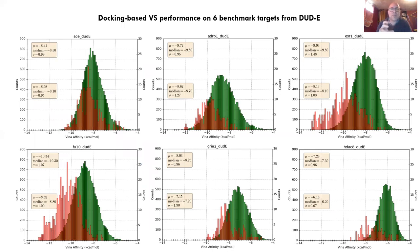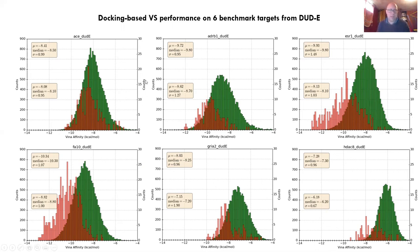Looking at six different benchmarking targets — six different proteins with known active and inactive compounds — this shows the score distributions for actives and inactives using a program called Vina. The actives' distribution of scores is slightly shifted away from the inactives, suggesting that docking is indeed a weak but real discriminator between actives and inactive chemicals. DUDDY is a set of benchmarking targets with known actives and inactives used to test docking programs.